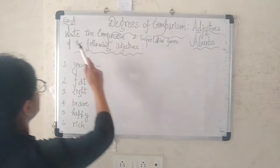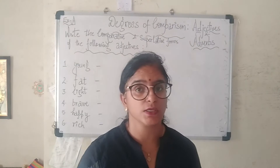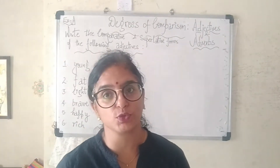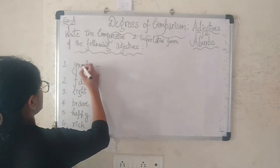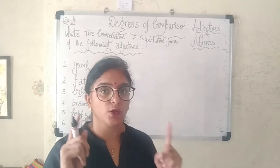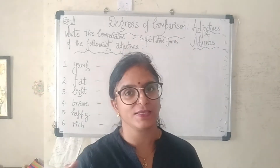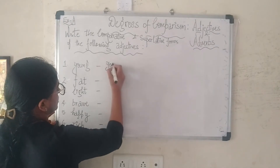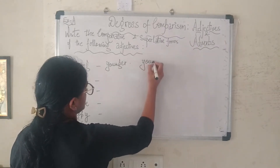Our first exercise is: write the comparative and superlative forms of the following adjectives. You are given a list of adjectives and you have to write them into the comparative and superlative forms. Our first adjective is 'young'. In the comparative form you have to add -er, and -est in the superlative form — so 'younger' and 'youngest'.